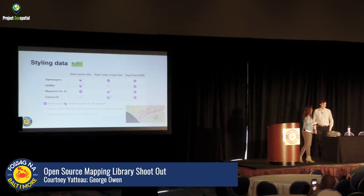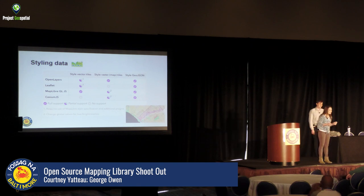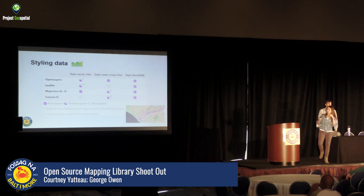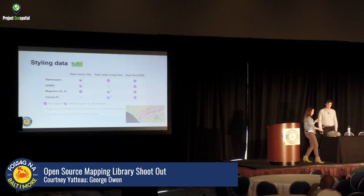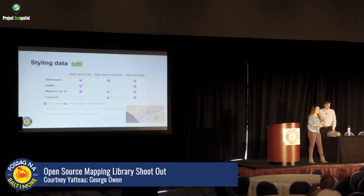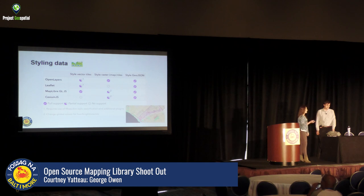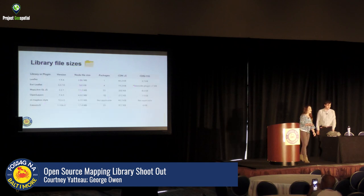Now on to styling data — that pretty image in the corner is an app George recently made. For vector tile styling, OpenLayers and Leaflet have partial support, with the MapLibre GL JS specification providing stronger support. The fullest and strongest styling support is with MapLibre GL JS. For raster styling, OpenLayers has had raster style support for a long time, while MapLibre and Cesium have partial support.